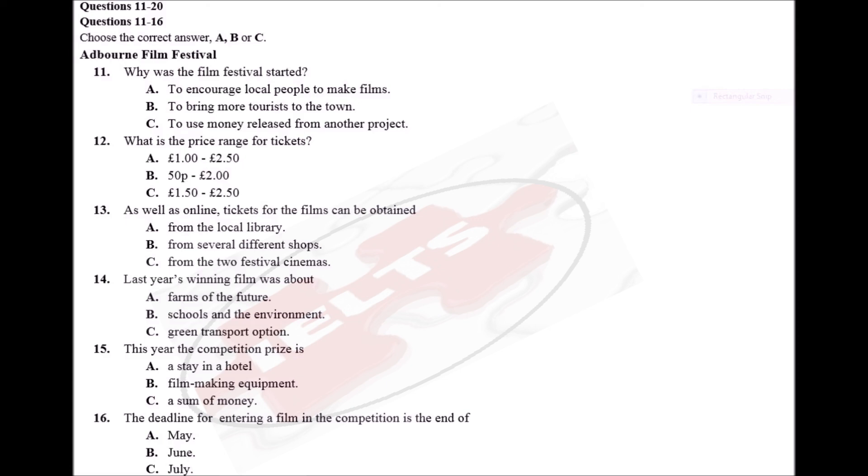Performances are advertised all around town and also on our website www.adbornfest.com. If you're interested in attending any performance, you can buy tickets online, of course, and you can also get them in the library, which is right next to the main shopping area. I'm afraid this year tickets are no longer available from either of the two cinemas because of restricted opening times.